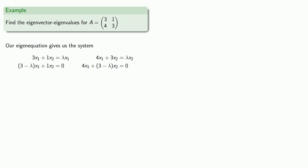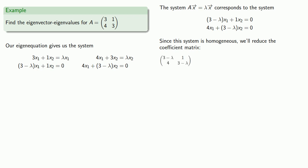And so the system, ax equals lambda x, corresponds to the system of linear equations. Since this system is homogeneous, we can reduce the coefficient matrix. Now, notice that if 3 minus lambda squared minus 4 is not equal to 0, there's going to be a unique solution to this system of equations.